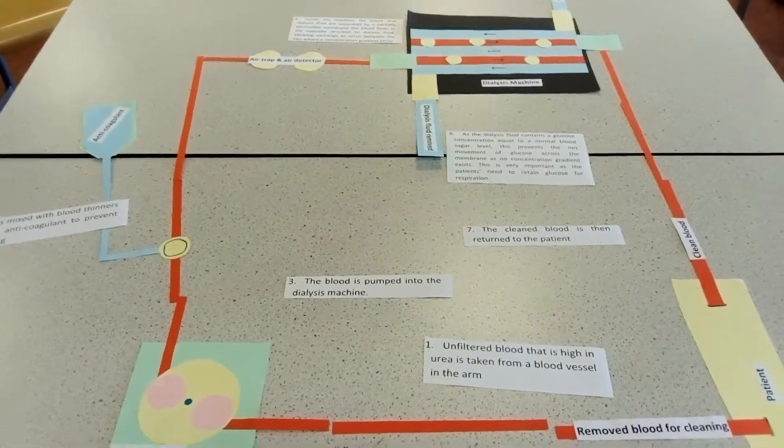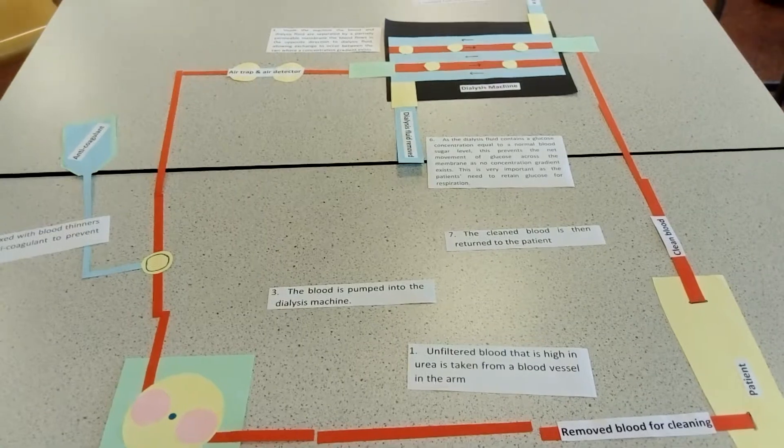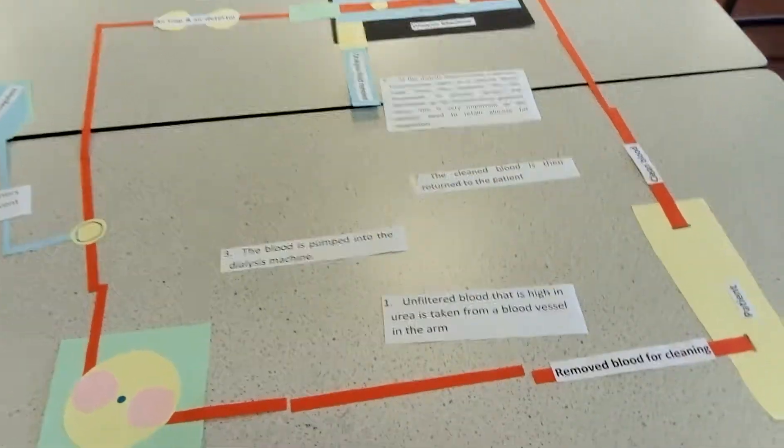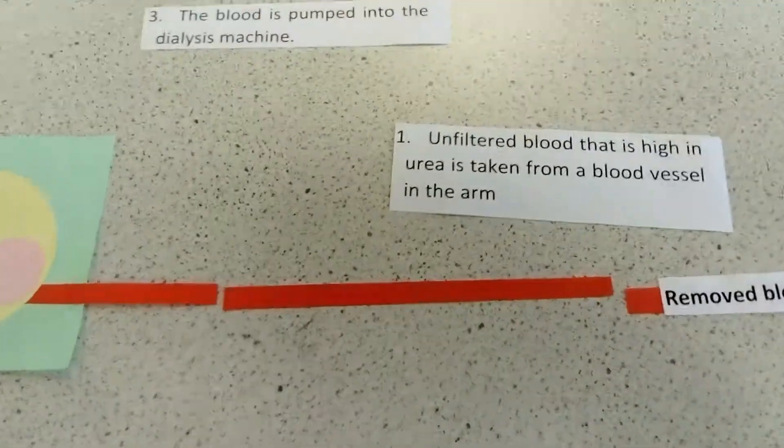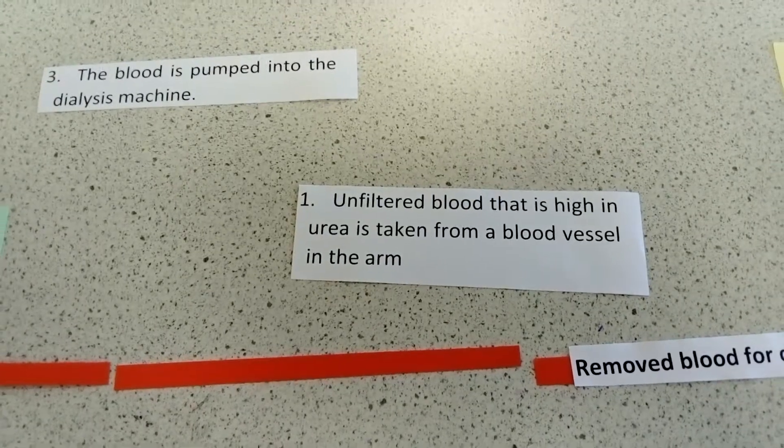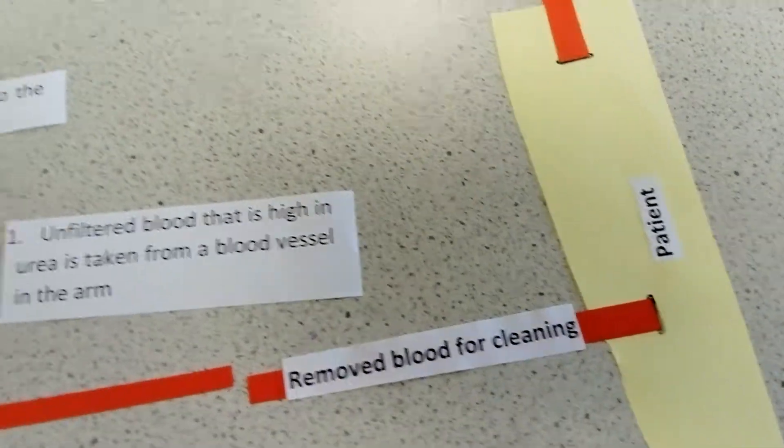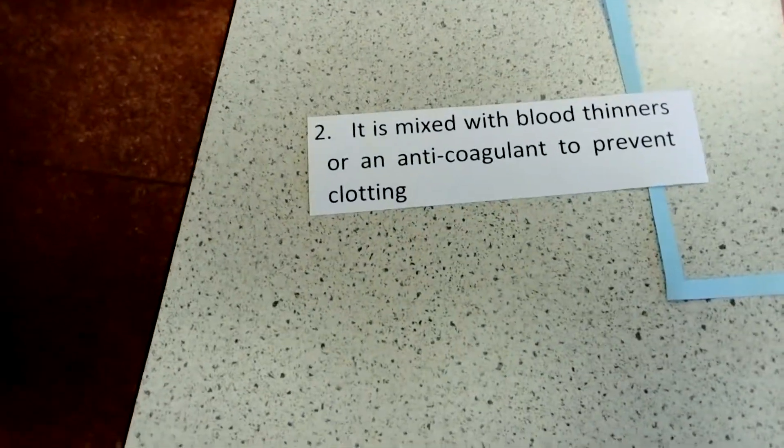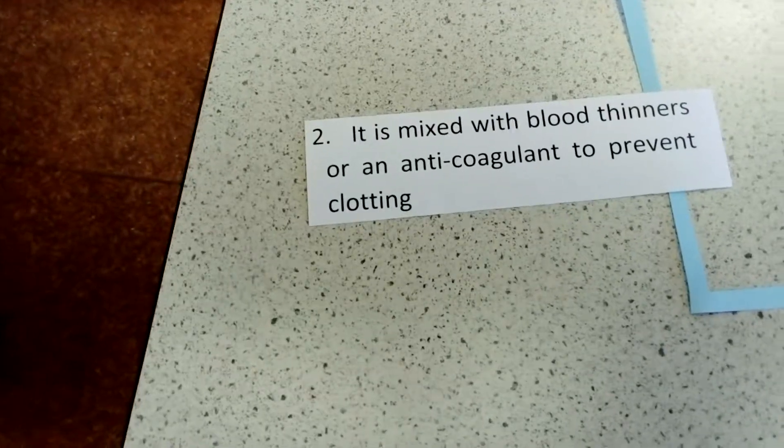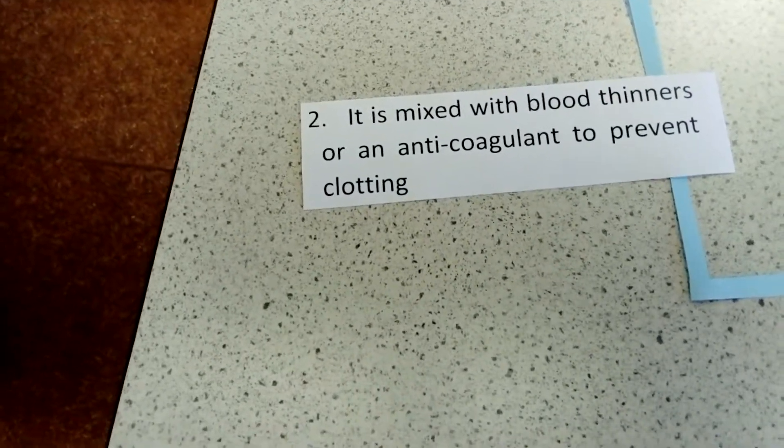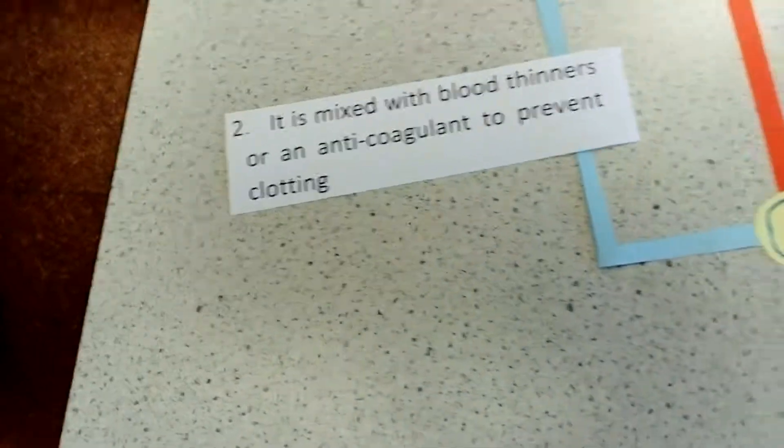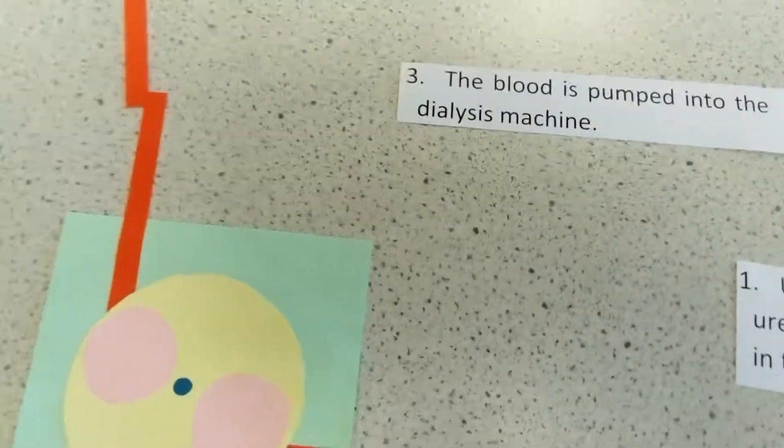The other way kidney failure can be treated is by using dialysis. First, unfiltered blood is taken from a blood vessel from the patient's arm. This blood is mixed with anti-clotting chemicals to prevent the blood from clotting while it's going through the machine.